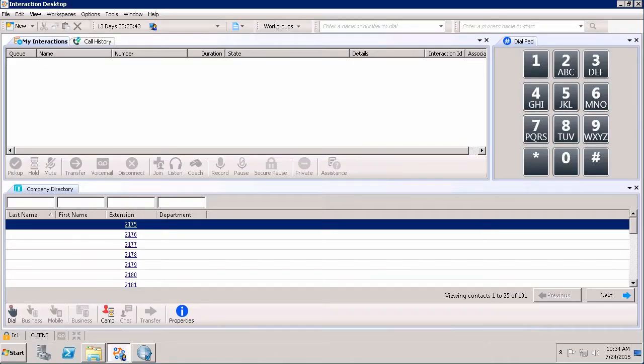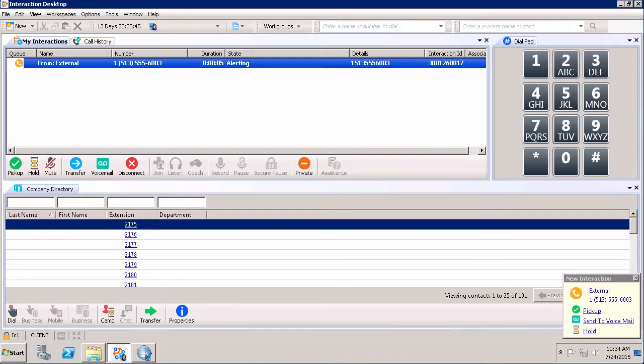So, in a typical call in Interaction Desktop, you see the call come in. There's a yellow icon underneath the queue column, and then when you click pick up, that icon goes green. This is what a typical call looks like.